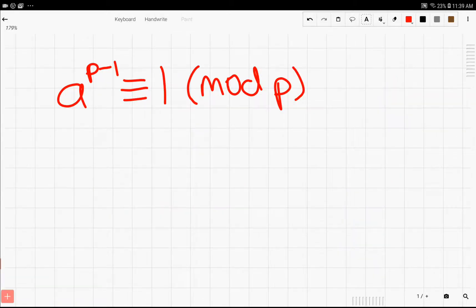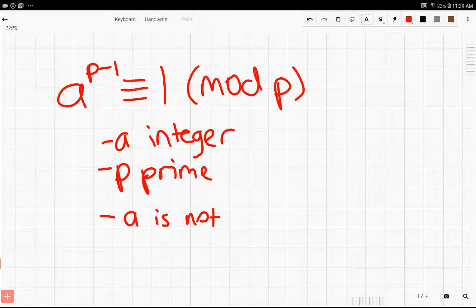Now the first theorem we're going to go over is Fermat's Little Theorem. This theorem essentially states that if a is any integer, and p is a prime, and a is not a multiple of p, then the following statement is true.